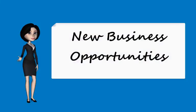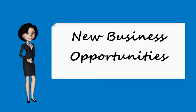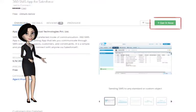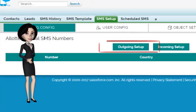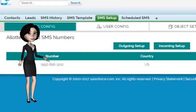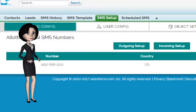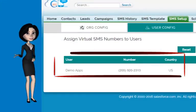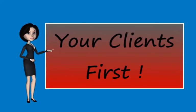So just a small thing like an SMS could create a whole new business opportunity for you. Just install the app, click on the outgoing setup button and get your own virtual number. Further, click on incoming setup to enable incoming messages, assign it to any user of your org, and take a step towards a better relationship with your clients.